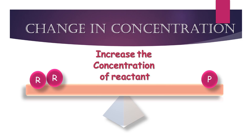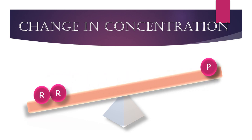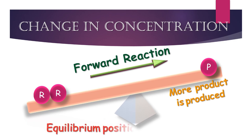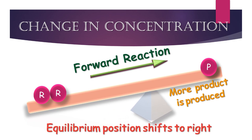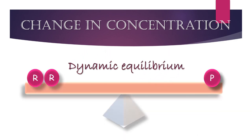When the concentration of reactants is increased, the equilibrium is disturbed. The reactants react to produce more products to minimize the effect of this change. Thus, increase in the concentration of reactants favors the forward reaction, which leads to the formation of more products and shifts the equilibrium position to the right. In this way, dynamic equilibrium is restored.